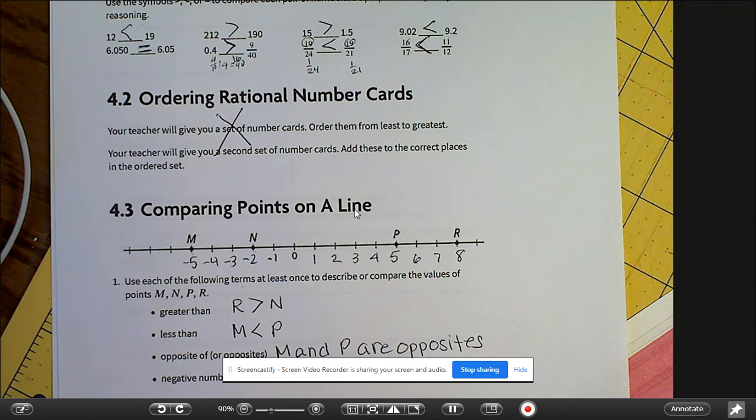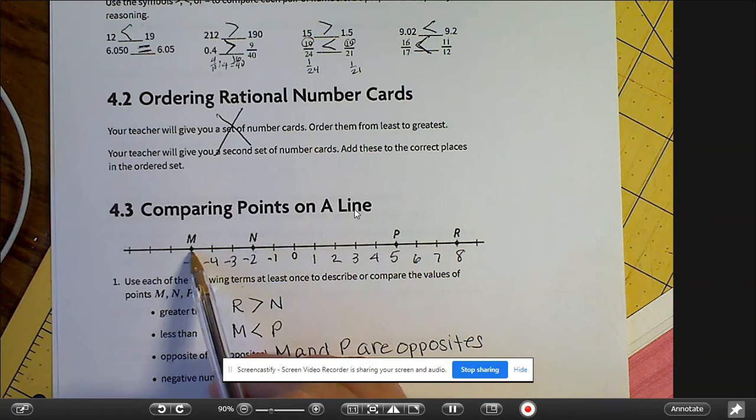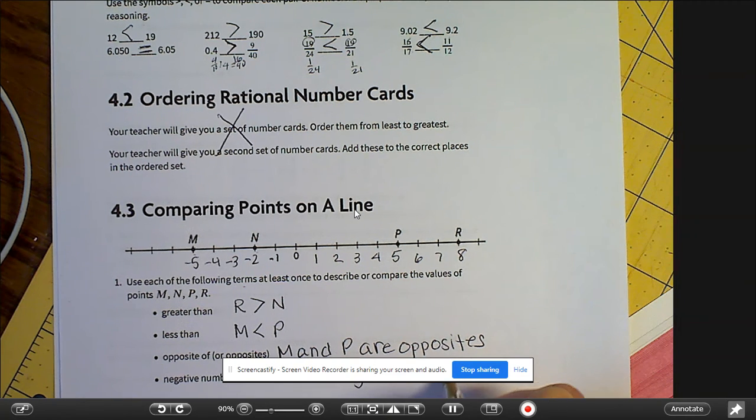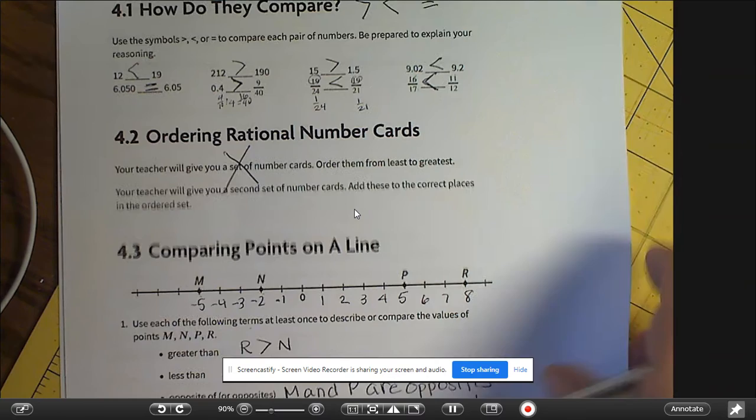So M and P are opposites. And then a negative number. N, N or M is the negative number. So you only have to do one. N is a negative number.